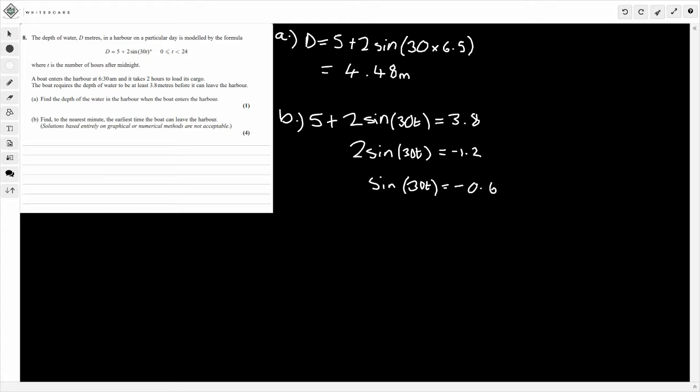So now we need to think about how we solve this. So we take the inverse here, right? So this is going to be inverse sine minus 0.6. So if we do that, so it's going to be sine inverse of minus 0.6. So make sure you're in degrees. This will give you minus 36.869.